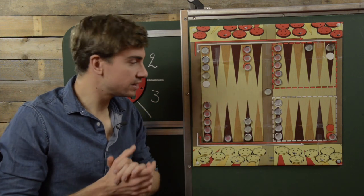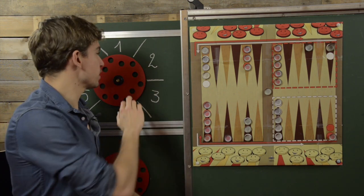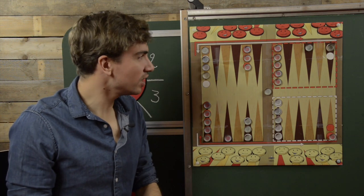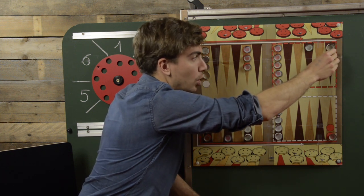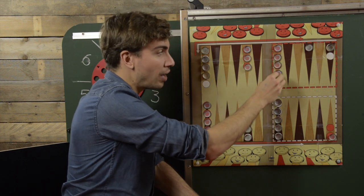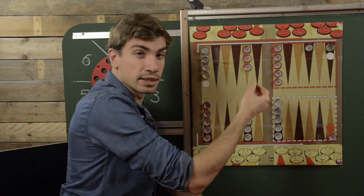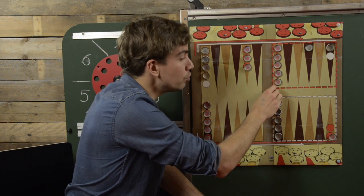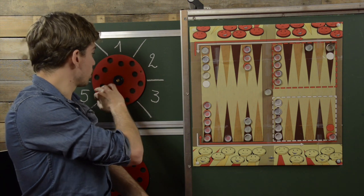Now the white team can only focus on getting this checker off the bar and back into the game board. Imagine I'm the white player again — I spin the disc twice and get six both times. I need to find an open space for my checker to come off the bar. But there are five red checkers blocking that point, so I can't place my bottle cap there. Since both rolls were blocked, I lose my turn and my checker must stay on the bar.